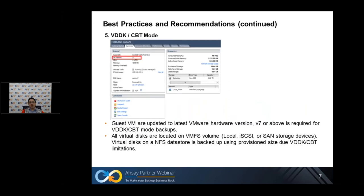Five: VDDK CBT mode. If you're backing up using VDDK CBT mode, make sure guest VMs are updated to the latest VMware hardware version. Version 7 hardware is required to run ESXi CBT mode; otherwise these VMs will default to non-CBT or VDDK mode. Also, make sure all virtual disks are located on the VMFS volume, either on local, iSCSI, or SAN storage. Virtual disks stored on an NFS volume are backed up using provision size due to a CBT limitation, so you may want to relocate these to a non-NFS datastore; otherwise the backup size will be larger.